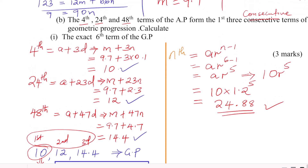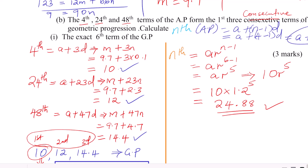Just to remind you: the nth term of an AP is given by A plus (N minus 1) times D. That is how we obtained the 4th term — when n equals 4, you get A plus 3D. In this question, A is replaced by M and D is replaced by N, and we substituted the values we already obtained.